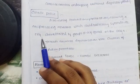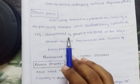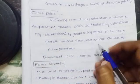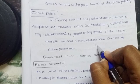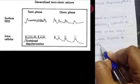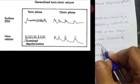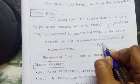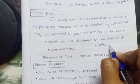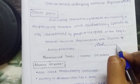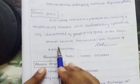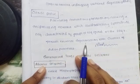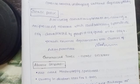EEG during clonic phase is characterized by groups of EEG spikes — we can observe spikes on the EEG tracing. There are also waves visible. This involves periodic neuronal depolarization with clusters of action potentials, so action potential changes will be absorbed on the EEG.